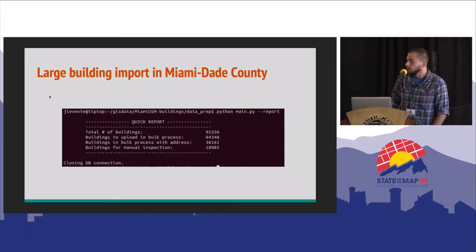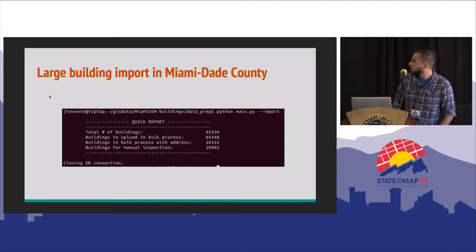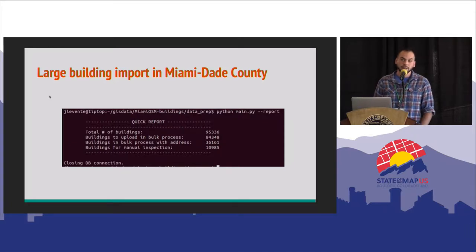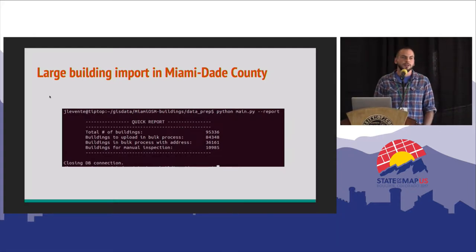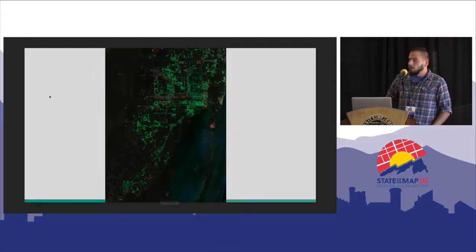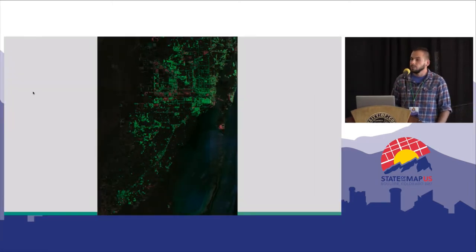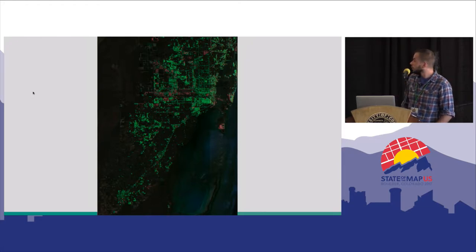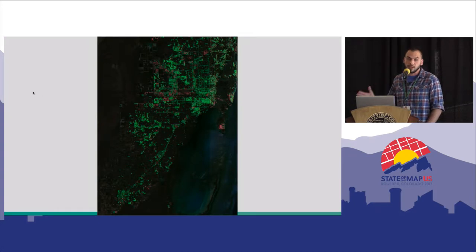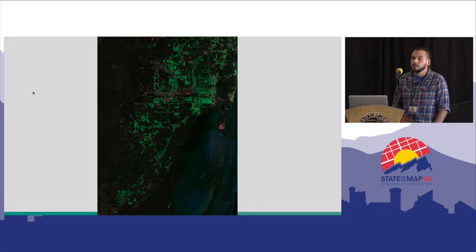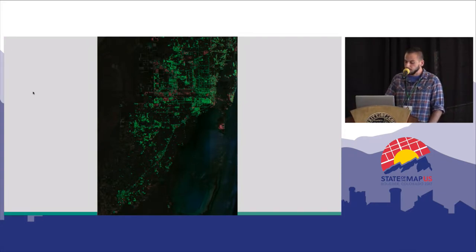The data volume of this import is almost 100,000 buildings. After the pre-processing steps, we ended up having 84,000 buildings in the automatic bucket uploaded with upload scripts, and that left us almost 11,000 buildings for actual mappers to review. This image shows the spatial distribution of this import — Miami-Dade County — where green colors represent buildings in the import dataset, and reddish colors show buildings that existed in OpenStreetMap at the time of import, which was virtually nothing.